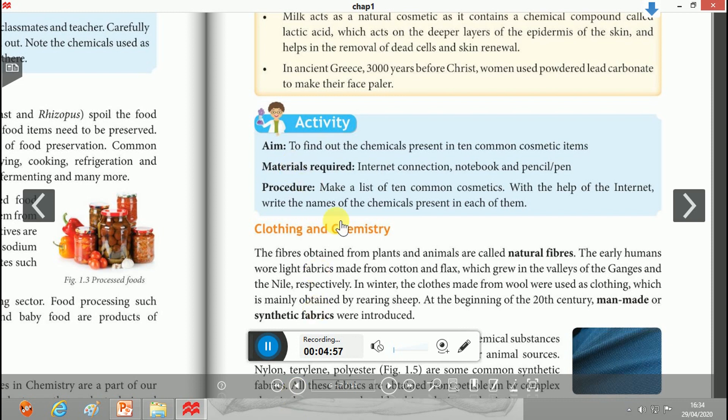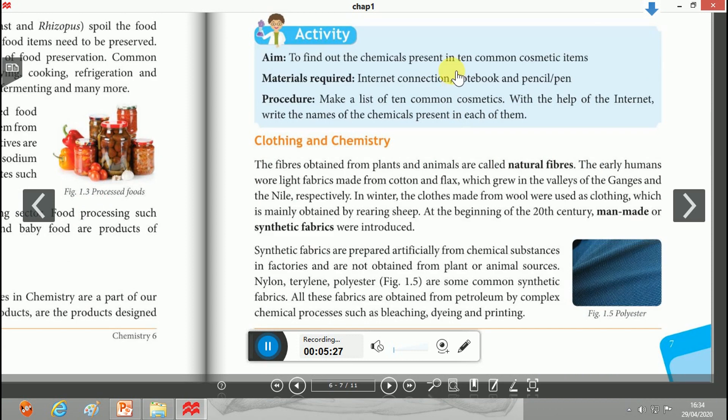So you can now understand the use of chemicals in everyday life in the cosmetic field. There is an activity: find out the chemicals present in ten common cosmetic items. You can use internet connections, notebook, pencil and pen, or you can directly check the ingredients list.